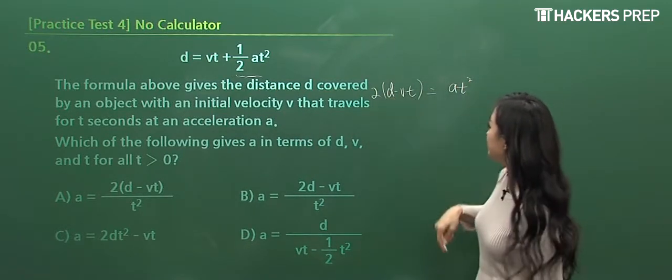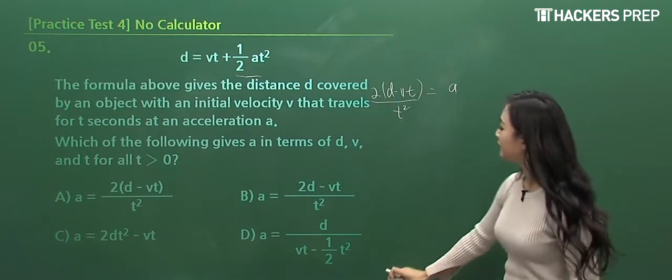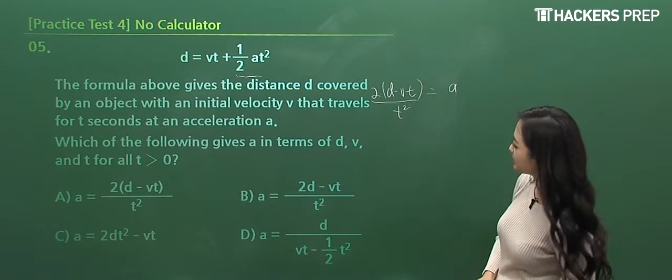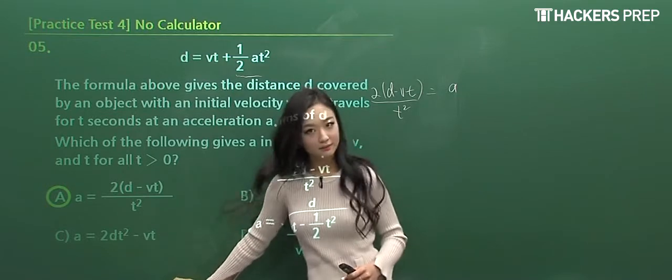And how do you get rid of the one-half here? You multiply two, both sides, and you divide it by t squared, and we're done with our final conclusion. So, do we have an answer choice that matches this exactly? I think we do. You circle a, and that's it.